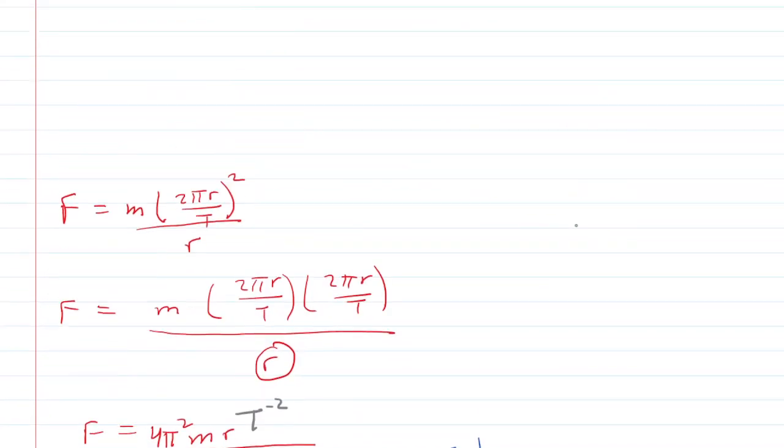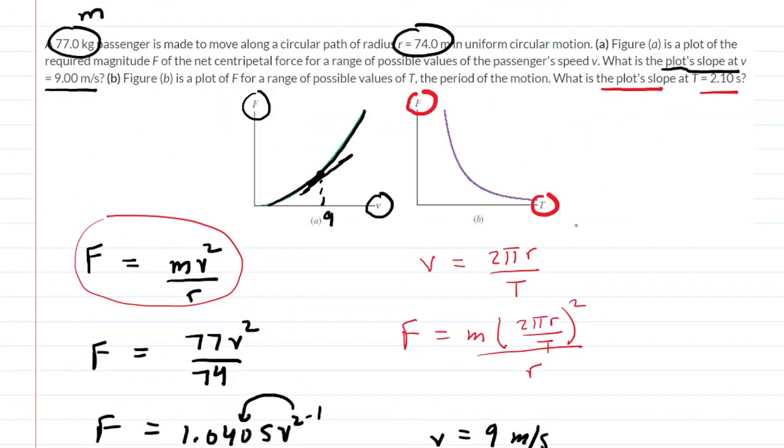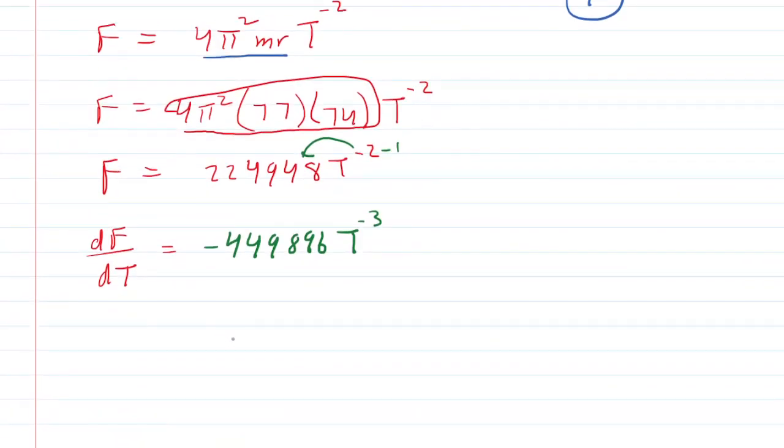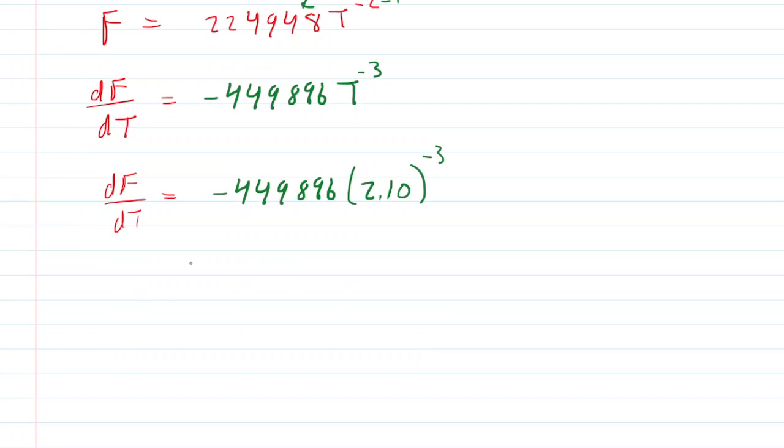All we need to do is go back up to the question in Part B and figure out what the period was. It was given as 2.10 seconds. So we'll come down here and just plug in 2.10 seconds for the period t. You can pick up your calculator and type that in. When you do so, you should get the following number.